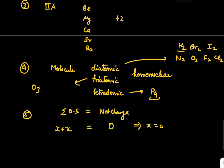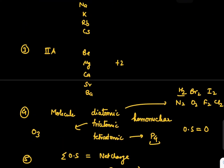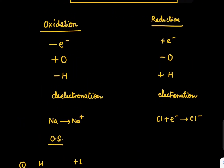Similarly, if it is tetraatomic like P4, there are four members, each with oxidation state x. So x + x + x + x = 0. Individually all are zero. That means for them oxidation state will be taken as zero.